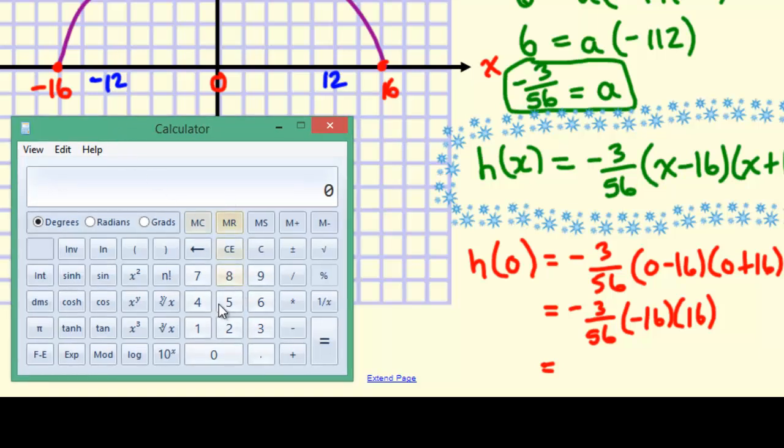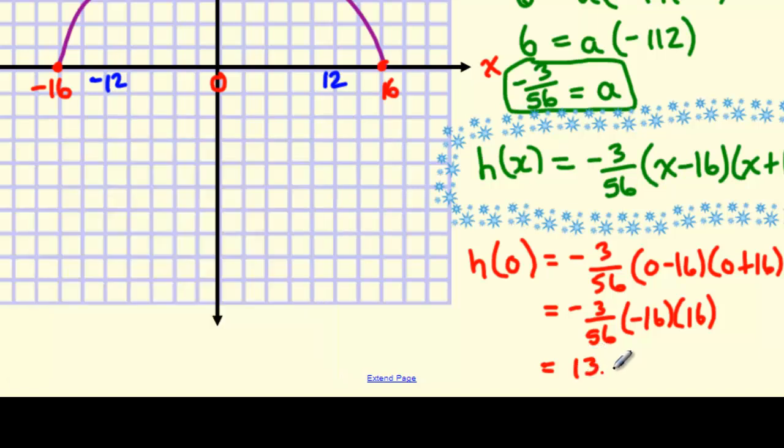So we have 16 multiplied by negative 16, and then we're also going to multiply by negative 3, and then divide by 56. And then divide by 56 equals 13.714, and of course we're rounding this to the nearest tenth, so 13.7. So our height is going to be 13.7 meters.